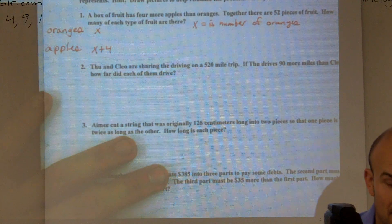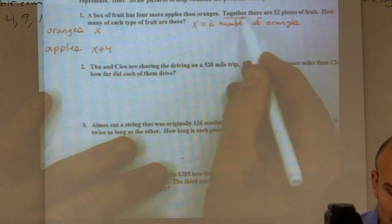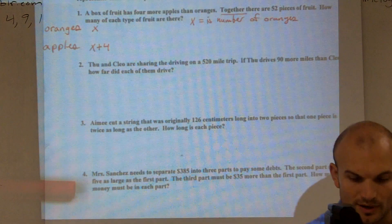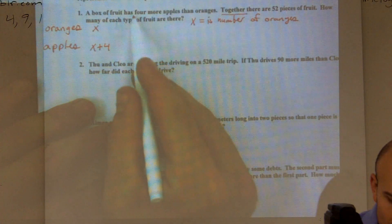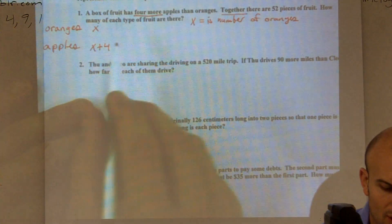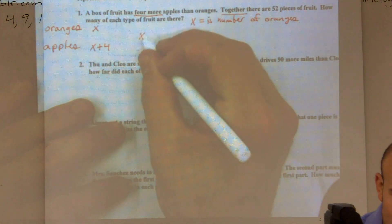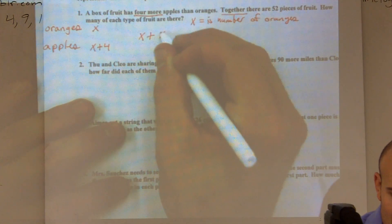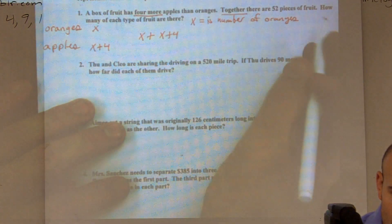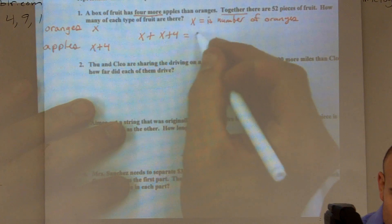Now the problem says together, which is going to tell me I'm going to add. A lot of times when I don't know what I'm doing, I'll underline four more, tells me plus four. Together is going to tell me to add. So I'll say x plus x plus four equals 52.